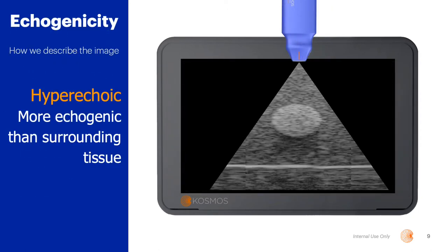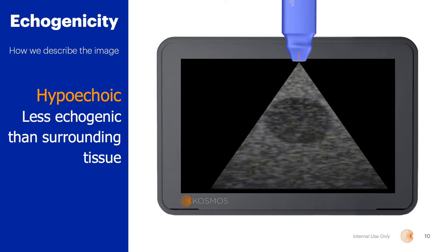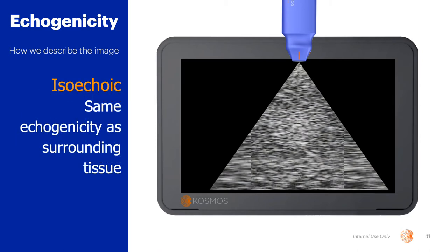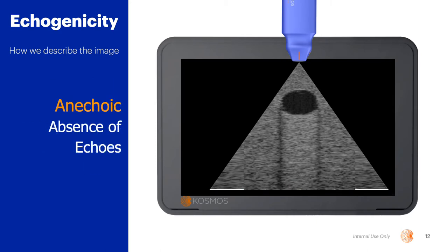The term echogenicity is one of the ways that we describe the ultrasound image. If the area of interest is more echogenic than the surrounding tissue, it is said to be hyperechoic. Conversely, if the area of interest is less echogenic, it is said to be hypoechoic. If the area of interest has the same echogenicity as the surrounding tissue, it is said to be isoechoic. And lastly, if there is an absence of echoes, it is said to be anechoic. Typically, fluid-filled structures will appear anechoic on the screen, providing we have our controls set correctly.